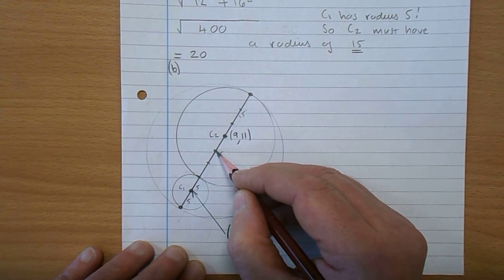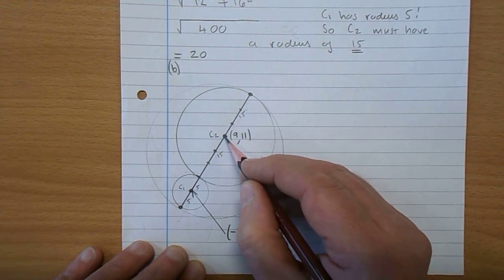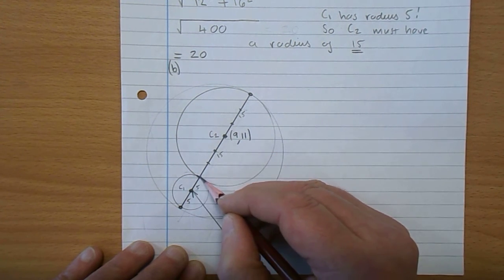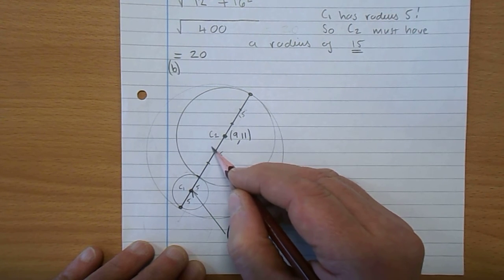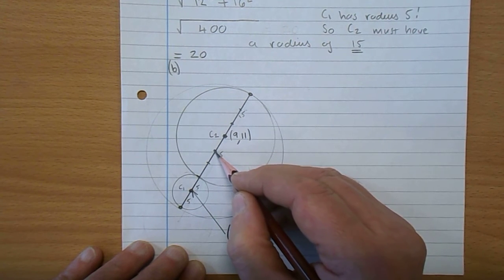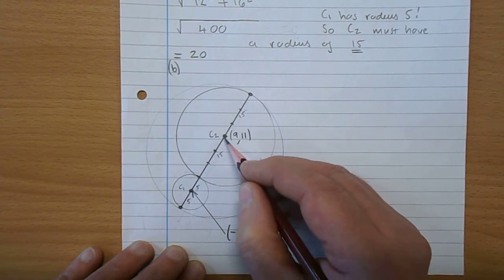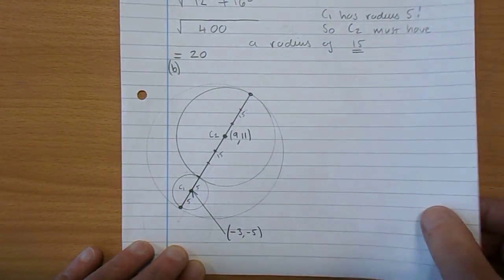Well, it's the coordinate that cuts the line going from C1 to C2 in a ratio 1, 2, 3 to 1. We want that point there. Cuts C1 to C2 in a ratio 3 to 1.